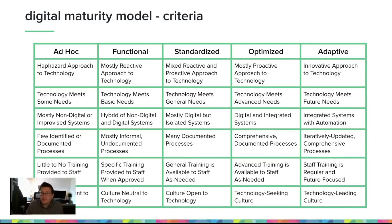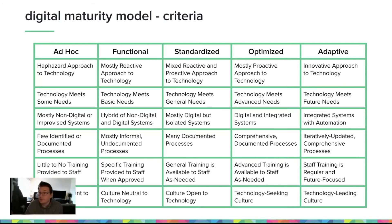Starting on the left in that column, we have ad hoc — that is stage one, the early stage of maturity. On the far right, we have adaptive, which is stage five, the highest level of maturity. This is kind of a journey, and in certain areas of an organization you're going to be less mature than others. Even if you reach adaptive, it doesn't mean you ever stop digital transformation. The whole idea of adaptive is to continue to mature as an organization — it just means the organization more inherently understands the value of technology and being digital.